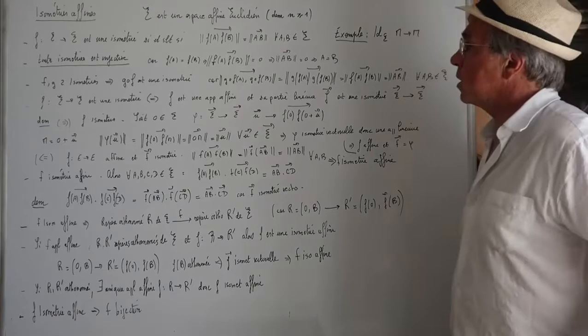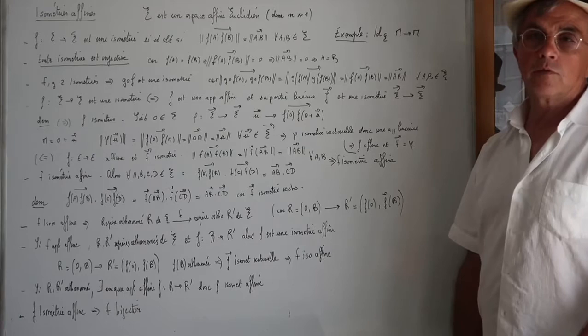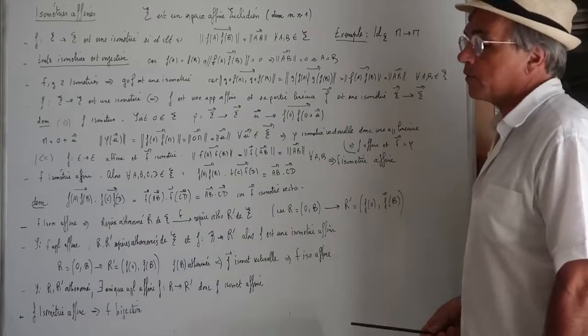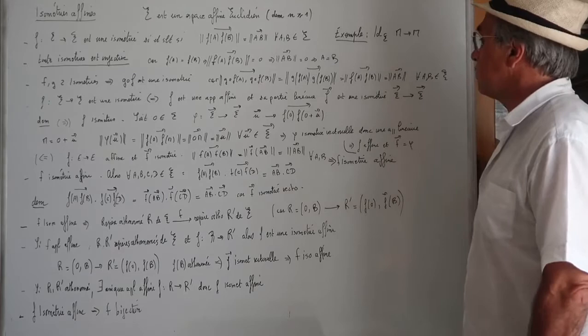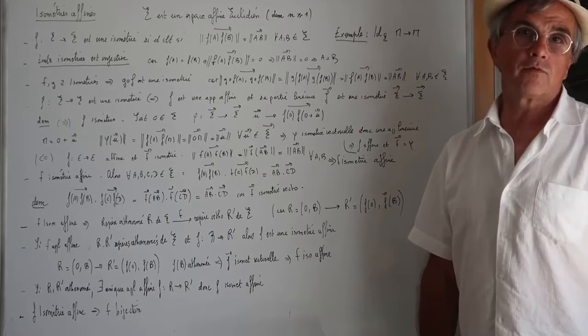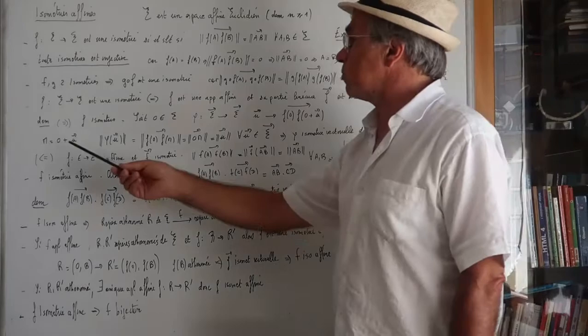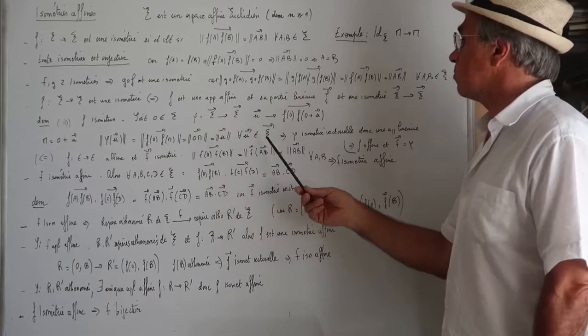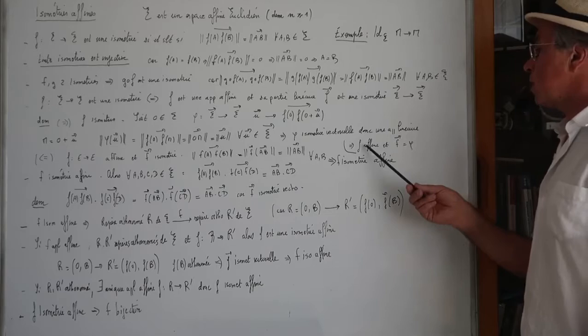F est une application de E vers E et est une isométrie si et seulement si F est affine et sa partie linéaire est une isométrie. Démonstration : si c'est une isométrie, on fixe un point O et on considère l'application Φ de E vers E qui à U fait correspondre F(O+U) - F(O). Donc F(M) = F(O) + Φ(OM). Si je prends un vecteur U et que je pose M = O + U, la norme de Φ(U) est égale à la norme de F(O)F(M), c'est-à-dire norme de OM puisqu'on a affaire à une isométrie, donc norme de U. Donc c'est bien une isométrie vectorielle, donc c'est une application linéaire, donc F est affine et sa partie linéaire c'est Φ.